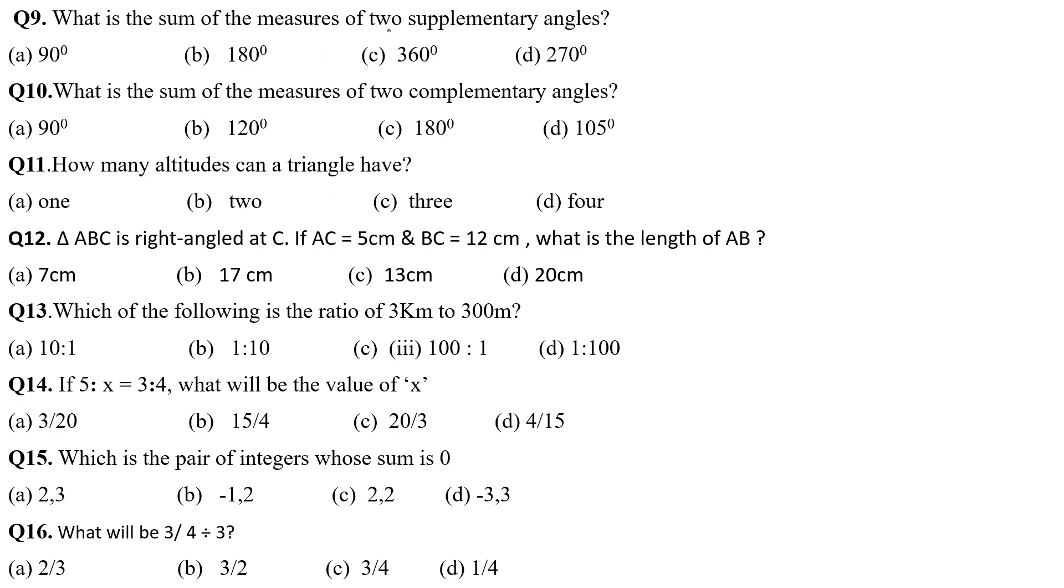Right now, next 9. What is the sum of the measure of 2 supplementary angles? No doubt, 180 degrees. But what is the sum of the measure of 2 complementary angles? I think it's 90 degrees. Absolutely correct answer. How many altitudes can a triangle have? Only 3. 3 median and 3 altitudes.